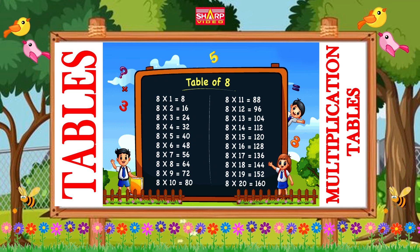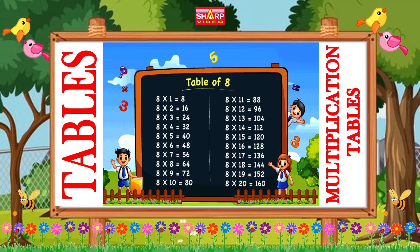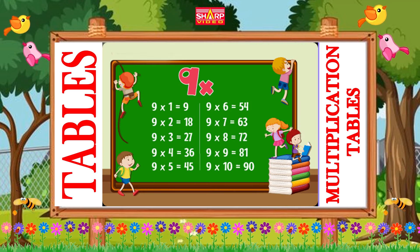Eight eights are sixty-four, eight nines are seventy-two, eight tens are eighty. Table of nine,